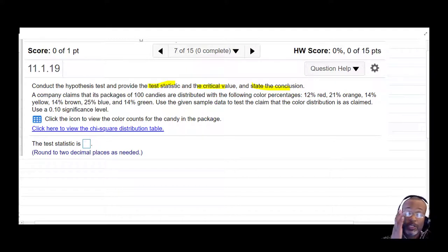Let's dig into this. The company claims that its package of 100 candies are distributed with a certain percentage of red, orange, yellow, brown, blue, and green candies. So use the given sample data to test the claim that the color distribution is as claimed. This claim is what's expected. We expect a certain distribution, but then we also have another set of numbers. If you click that icon, what it's going to bring up is what was observed, the actual counts.